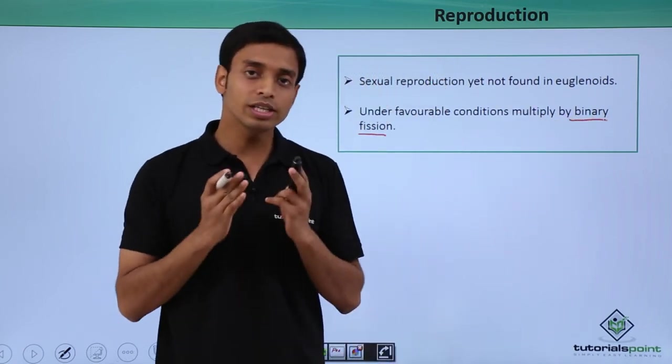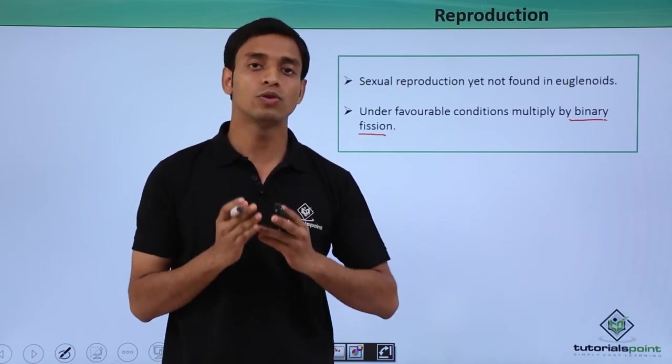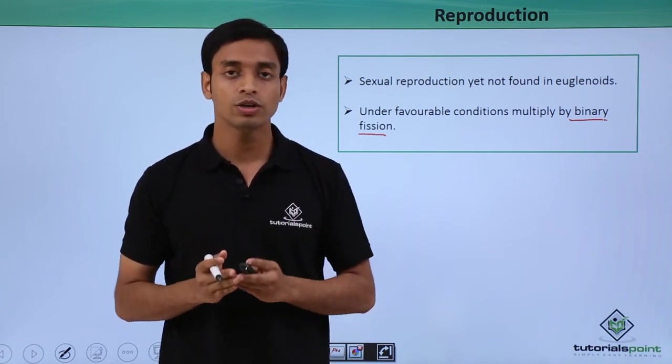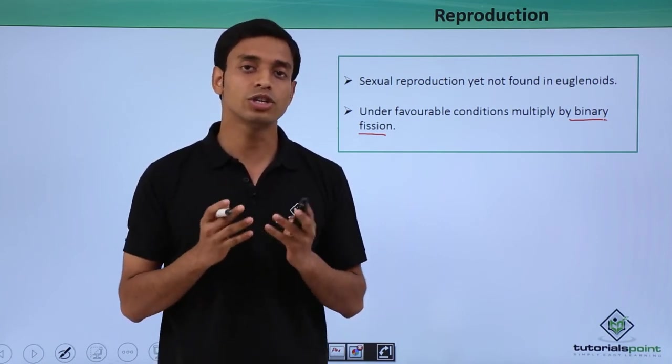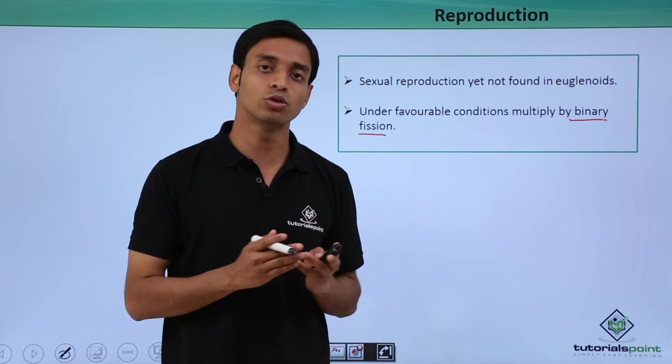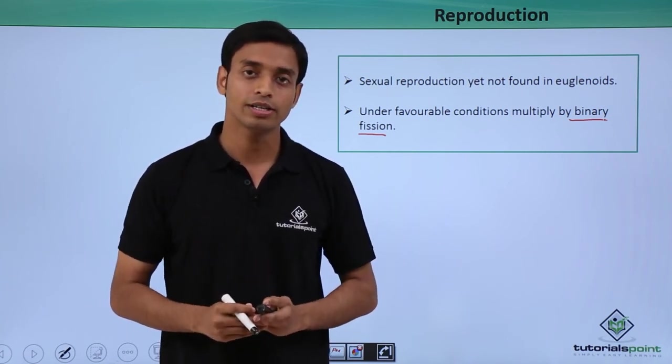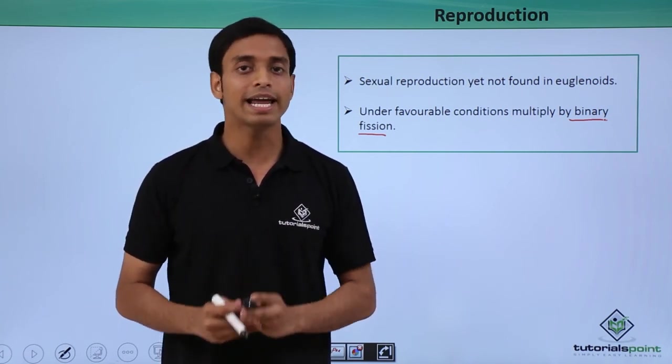So in this video we have talked about a photosynthetic group of protists which is known as euglenoids. We have talked about the basic structure and some of the basic general characteristics of this group. I hope you have understood and liked this video.